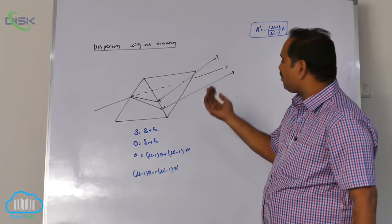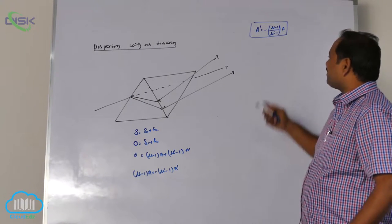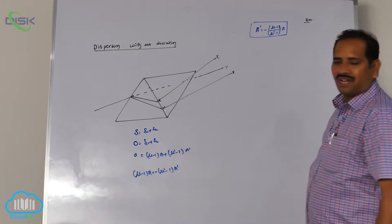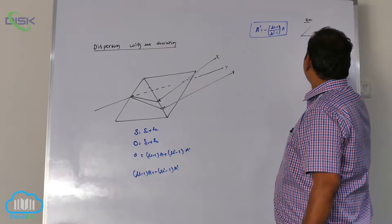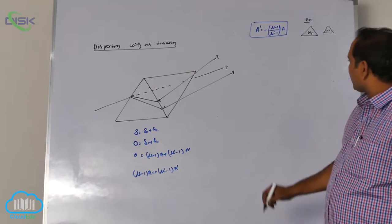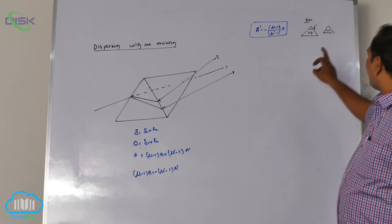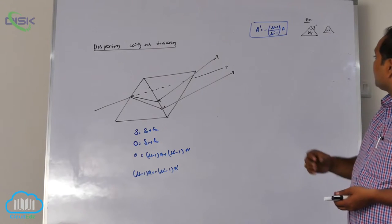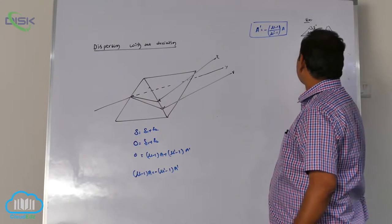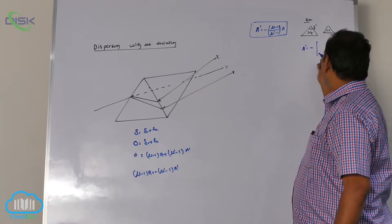The negative sign indicates the second prism must be reversed. In examination problems, they may ask directly: suppose two prisms are given with refractive indices 1.4 and 1.6, and one prism has an angle of 8 degrees. Find the other prism angle A dash such that there is no deviation but dispersion is present. The condition to get A dash is simply by substitution.